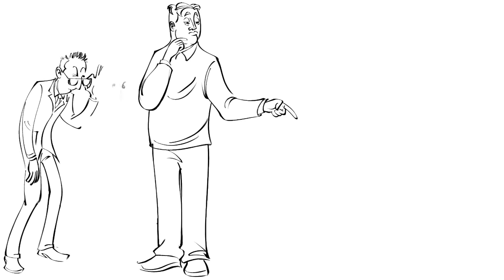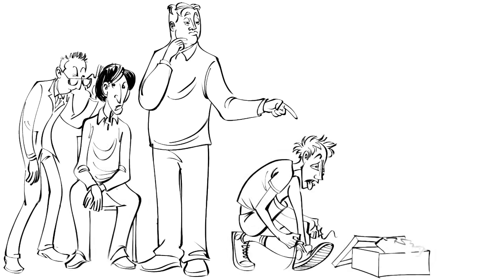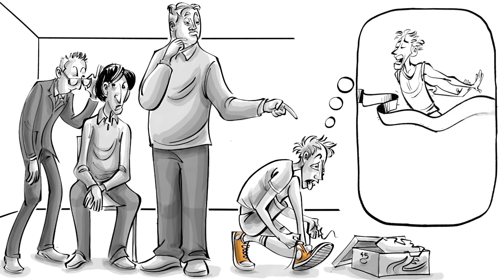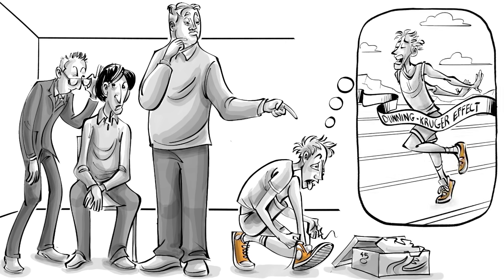Baffled by this reasoning, David Dunning and Justin Kruger, two psychologists, studied Mr. Wheeler and others like him. They came to the conclusion that people with low ability at a task tend to, paradoxically, overestimate themselves. This cognitive bias is known as the Dunning-Kruger effect.